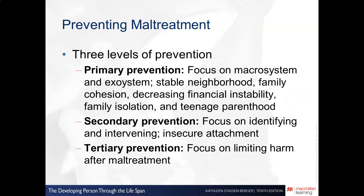Regarding preventing maltreatment, behavioral scientists have identified three levels of prevention. Primary prevention is the first level, focusing on the neighborhood, family, financial stability or instability, family isolation, and teenage parenthood. Addressing these factors constitutes the primary mode of maltreatment prevention.